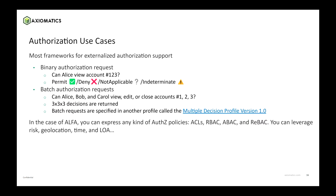Some of the use cases: binary authorization requests — can Alice view account 123? In Alpha, you get essentially yes or no as the answer. You can also do batch authorization requests. If you're thinking about authorization from a scale perspective and you want to know which records a person can access, you can also do that.